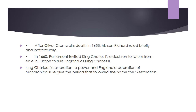After Oliver Cromwell's death in 1658, his son Richard ruled briefly and ineffectually. In 1660, parliament invited King Charles I's eldest son to return from exile in Europe to rule England as King Charles II. King Charles II's restoration to power and England's restoration of monarchical rule give the period that followed the name the Restoration.